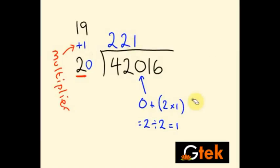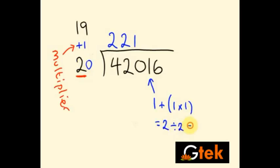Then the next number is 1. So I am taking this 1 plus the pre-quotient is 1 into my multiplier 1. So 1 plus 1 is 2. So 2 divided by 2 is equal to 1. I will make it out this.